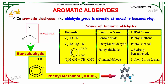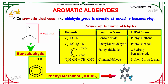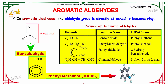The formula C6H5CHO has the IUPAC name phenyl methanol and common name benzaldehyde. C6H5CH2CHO has the common name phenyl acetaldehyde and IUPAC name phenyl ethanol.